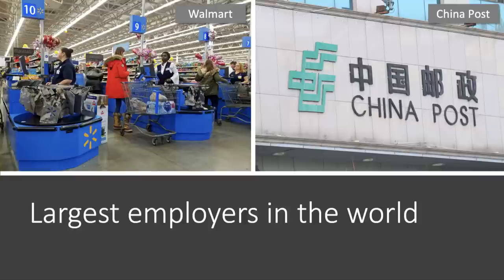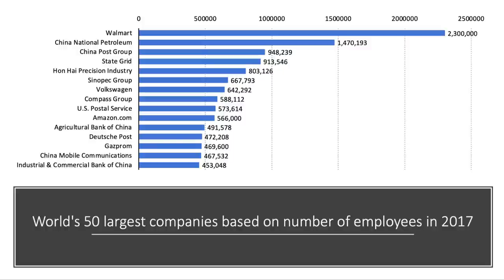Let's think about some big employers first of all — the largest employers in the world. These are businesses that employ tens or hundreds of thousands of people. This chart shows the world's biggest companies based on employees in 2017. Top of the list is Walmart, with nearly two and a half million people employed, just under one and a half million employed by China Petroleum, just under a million by China Post, and Amazon now employs well over 500,000 people.